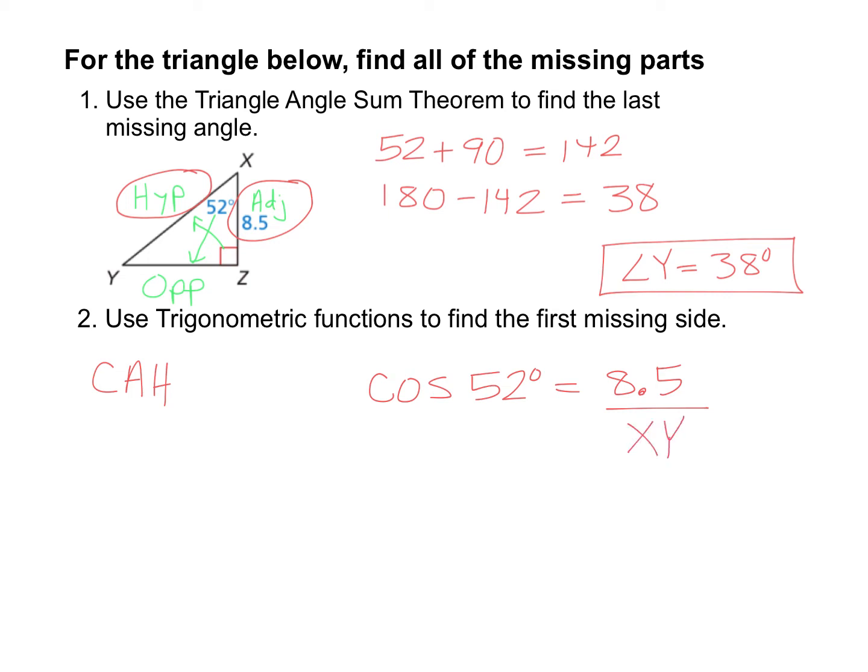Now we can go ahead and solve that with the cross product property. Cosine of 52 gets multiplied with XY. Type XY times the cosine of 52. And that's going to be equal to 1 times 8.5, which is just 8.5.